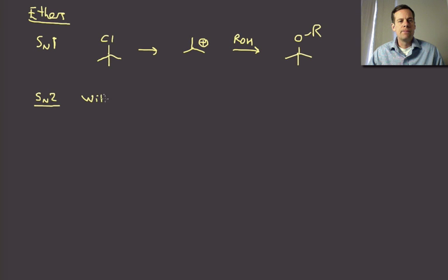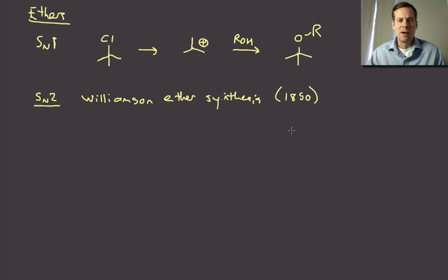And so SN2 strategies turn out to be very useful as well. And here, the most common approach to ethers in this way is something that's called the Williamson Ether Synthesis. And this was something that was actually first described in 1850, so before the Civil War.